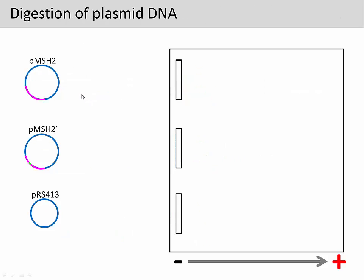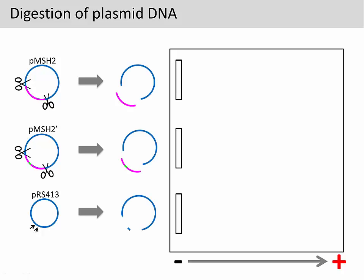To distinguish the plasmid DNA with insert from the plasmid DNA without insert, you can digest the plasmid DNA with APA1 and XBAR1. The recognition sites for these two enzymes are indicated by two scissors, and the restriction sites are also present on the empty vector, but the two sites are very close to each other. After digestion, both pMSH2 and pMSH2 prime will be cut into two large fragments, and the empty vector will be cut into two fragments as well, but one of the fragments is very small.